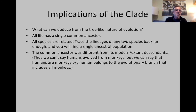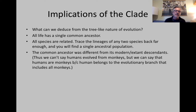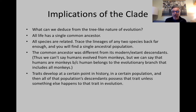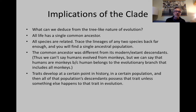Thirdly, the common ancestor between any two species was different from its modern, or extant — which means currently living — descendants. For example, that means we can't say that humans evolved from monkeys. But we can say that humans are monkeys, because humans belong to the evolutionary branch that includes all monkeys. Finally, traits are developed at a certain point in history in a certain population, and then all of that population's descendants possess that trait unless something else happens to it in evolution. That's going to turn out to be really important.